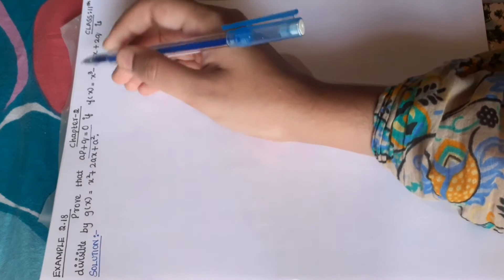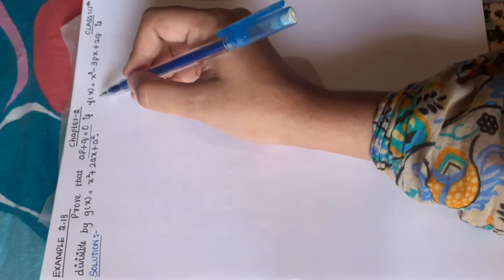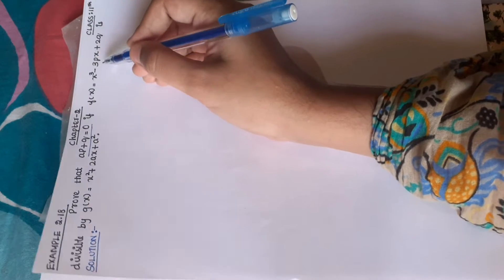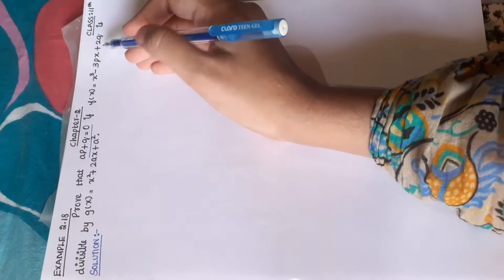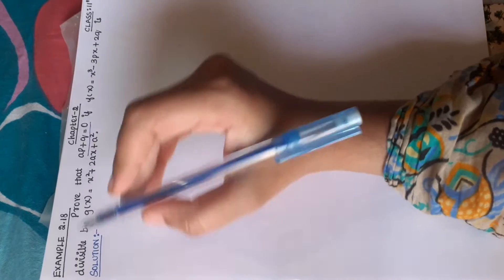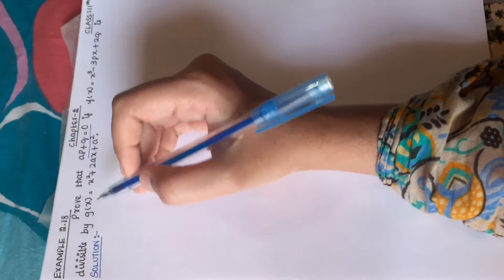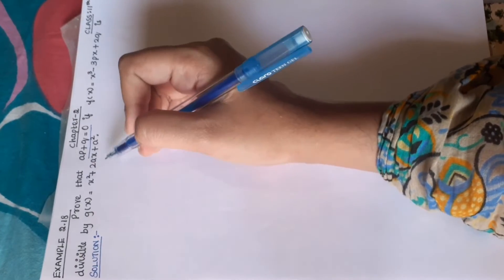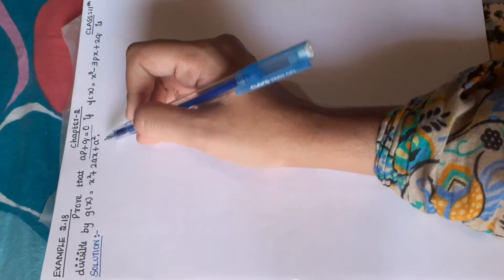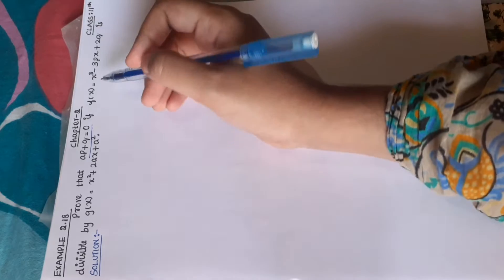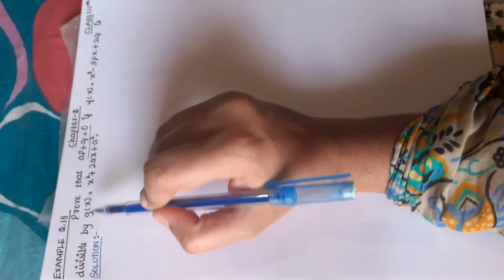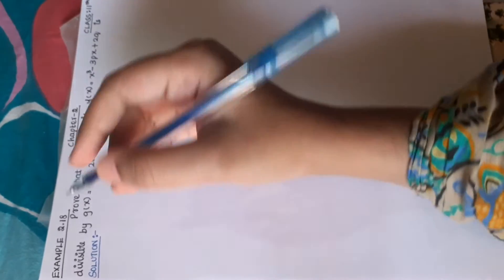Given that f of x is equal to x cube minus 3px plus 2q, which is divisible by g of x equal to x square plus 2ax plus a square. So f of x is divisible by g of x.